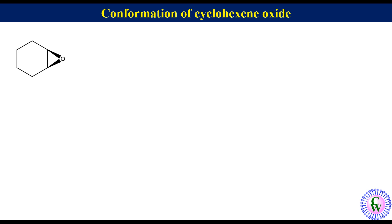For better understanding, label the ring carbon atoms as 1, 2, 3, 4, 5, and 6. Here the six-membered and three-membered rings are cis-fused. Because of this, the four atoms C6, C1, C2, and C3 must lie more or less in the same plane, like this.